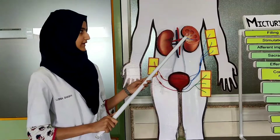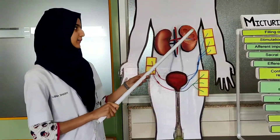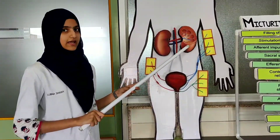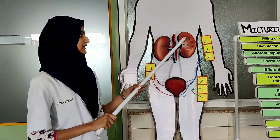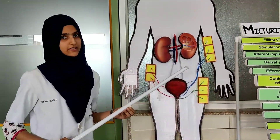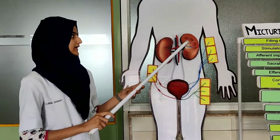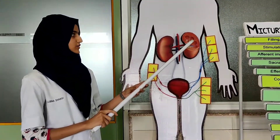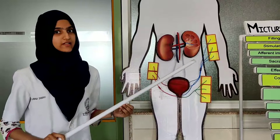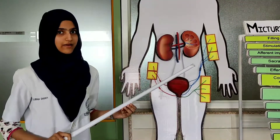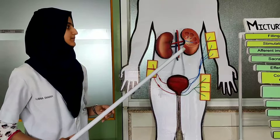The outer cortex is granular in appearance and it consists of renal tubules and renal corpuscles. In the medulla, there are pyramid-like structures, and there are 8 to 18 Malpighian pyramids present in the kidney.